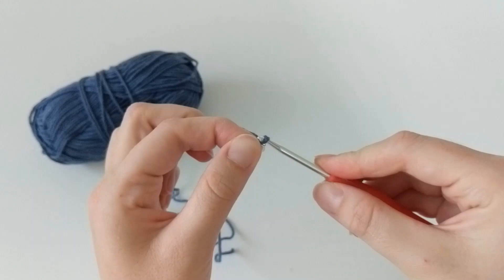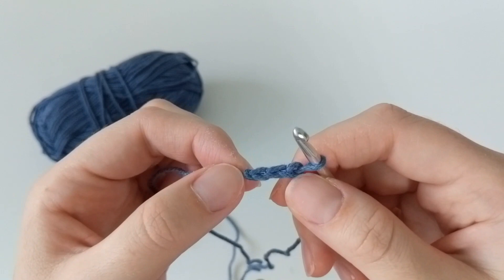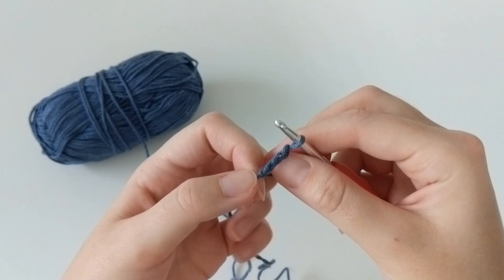Let's try it again. Wrap my yarn over the hook and pull through. And we can actually take a look and see how many chains we have. One, two, three. We have three chains.